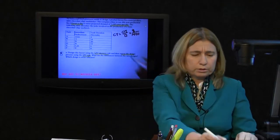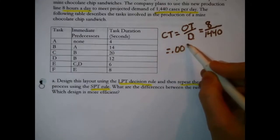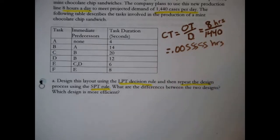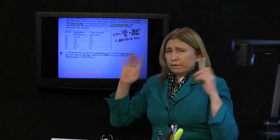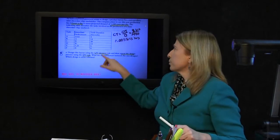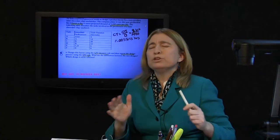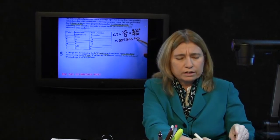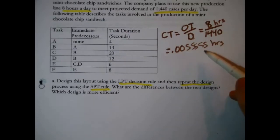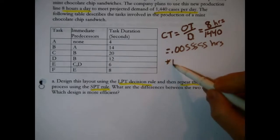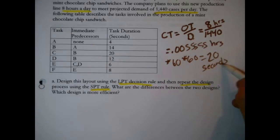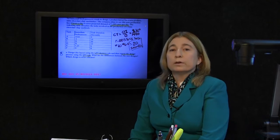That comes out to 0.005555 hours — a very small number. Remember, whatever units the numerator is in, that's what the answer comes out in. With cycle time, don't proceed further until you've adjusted it to match whatever units the duration data is in. Multiplying by 60 gives minutes, and multiplying by 60 again gives seconds. So in order for this line to work, the budget of time at each workstation can only be 20 seconds.